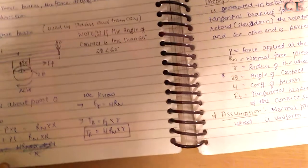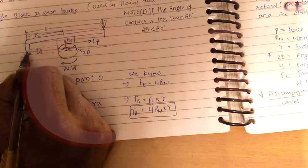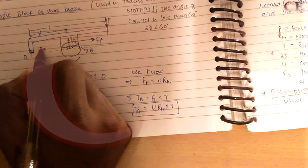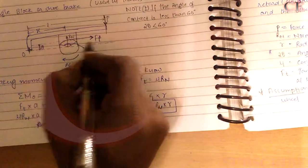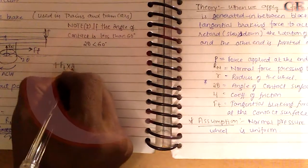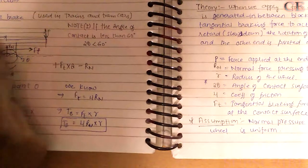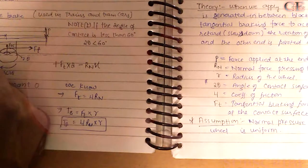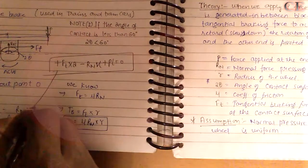Using these forces, we write the moment equation. Taking moments about the fulcrum and setting them equal to zero: Ft times the distance from the fulcrum is positive (clockwise), minus Rn times x (negative direction), plus P times l (clockwise) equals zero.